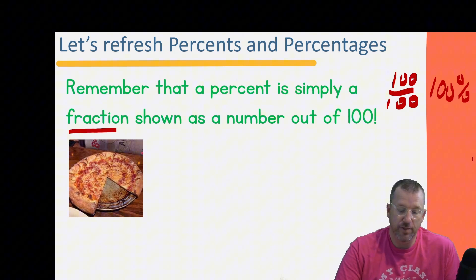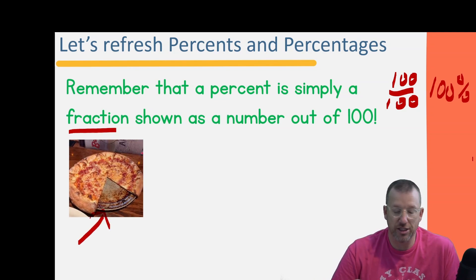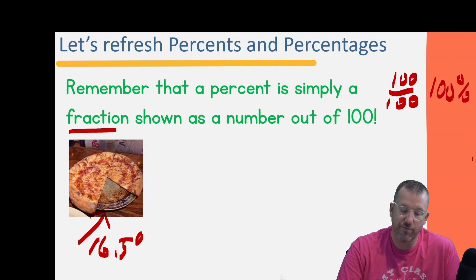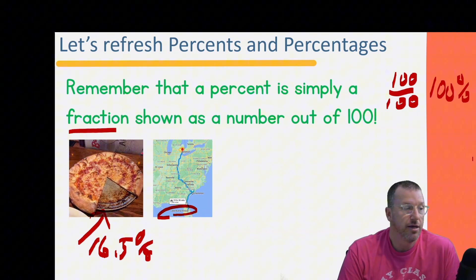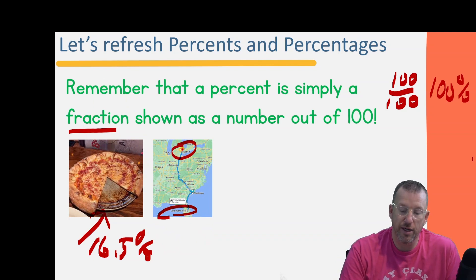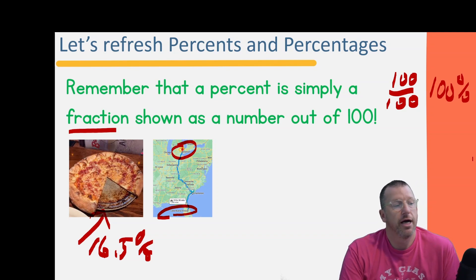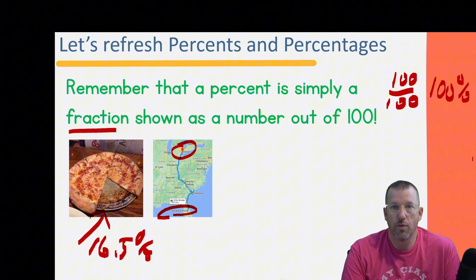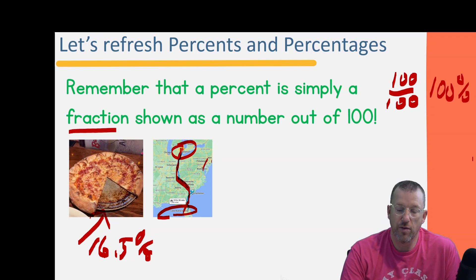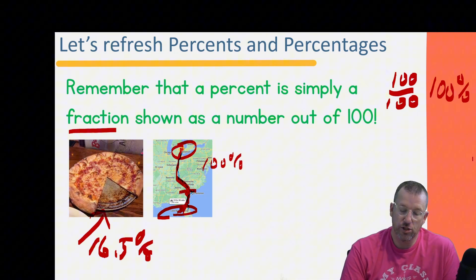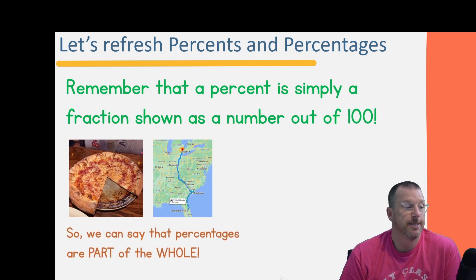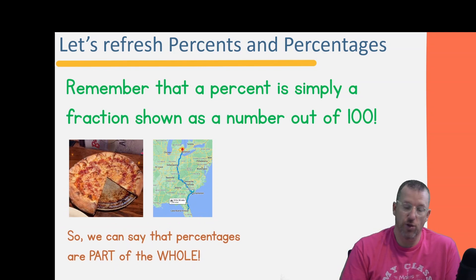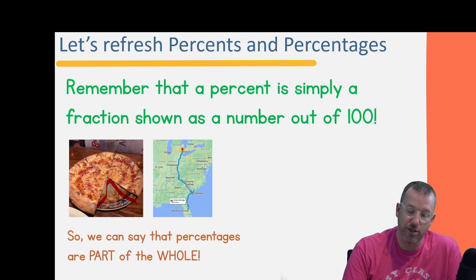Percent shows a fraction out of 100. Here's a whole pizza — 100 percent — but somebody ate a portion of it, about 16 and a half percent. Or look at this road trip map: someone's driving from Lake Winnavista all the way to Detroit, and they drive about 30 percent of it in one day. Percent shows a part of a whole, always based out of 100.